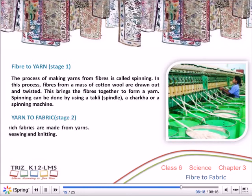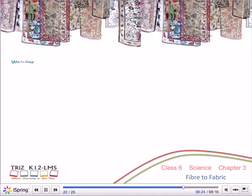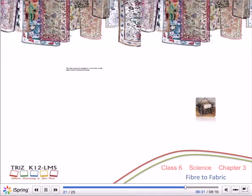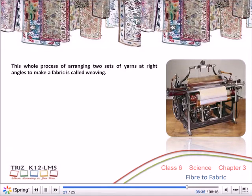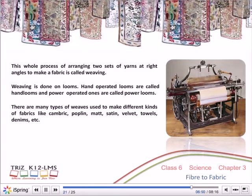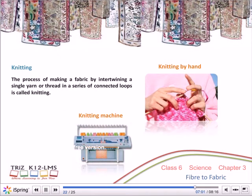Stage 2, Yarn to Fabric: There are many ways by which fabrics are made from yarns. The two main processes are weaving and knitting. Weaving is the process of arranging two sets of yarns at right angles to make a fabric. It is done on looms — hand-operated looms are called hand looms and power-operated ones are power looms. Types of weaves include cambric, poplin, mat, satin, velvet, towels, denims, etc. Knitting is the process of making a fabric by intertwining a single yarn in a series of connected loops, done by hand, knitting needles, or machine.